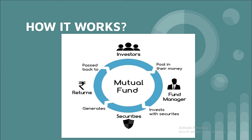In a mutual fund, the money is pooled from many investors and this cash is entrusted with a fund manager. The fund manager invests it in different securities. This fund will generate some returns. Returns can be of two types: annual income in the form of interest or dividend, and capital gain or capital appreciation. The equity component of a mutual fund can generate dividend income.